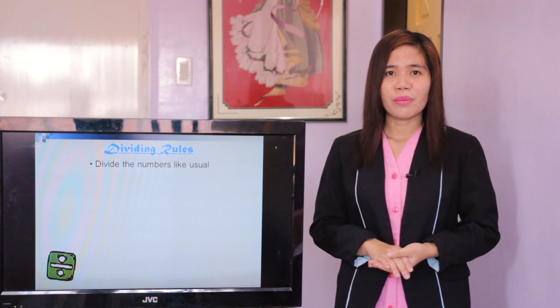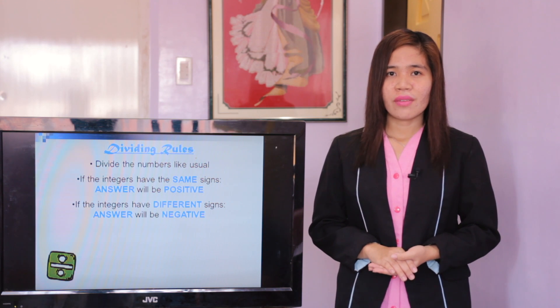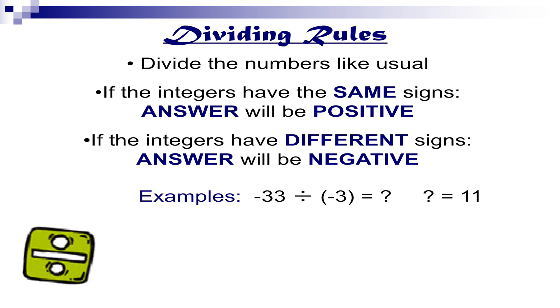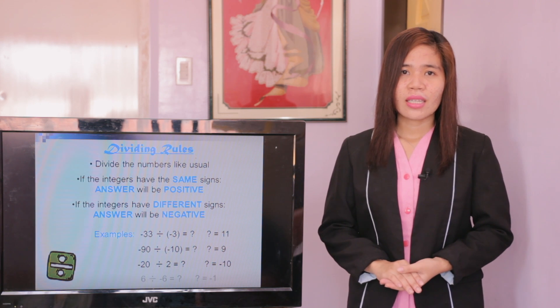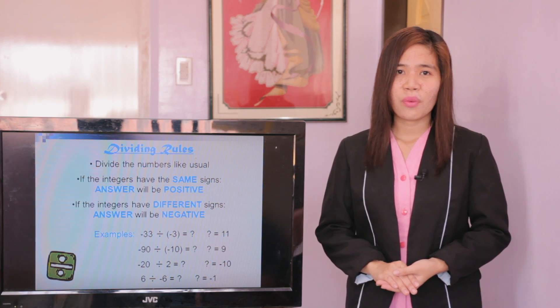Now let's go to the last operation, which is division. Dividing rules: first, divide the numbers like usual. Second, if the integers have the same signs, the answer will be positive. Third, if the integers have different signs, the answer will be negative. Examples: negative 33 divided by negative 3 equals positive 11. Negative 90 divided by negative 10 equals positive 9. Negative 20 divided by positive 2 equals negative 10. Positive 6 divided by negative 6 equals negative 1.